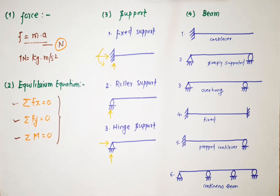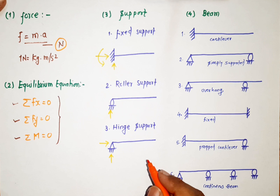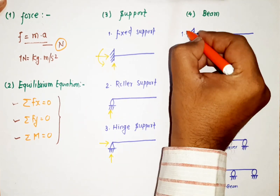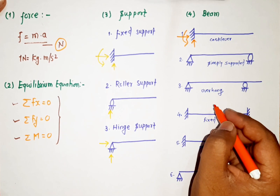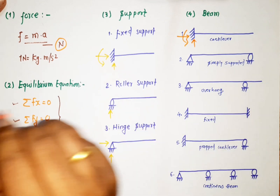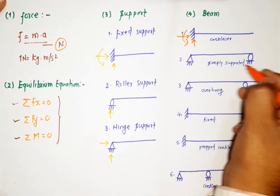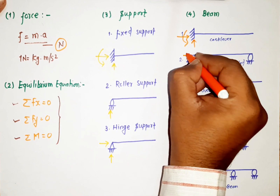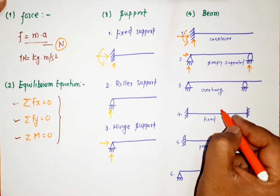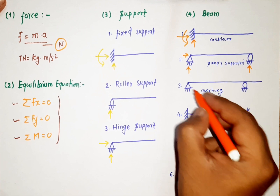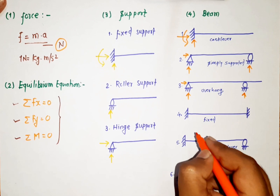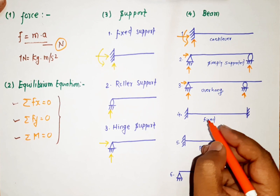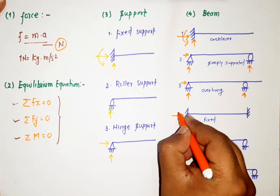Applying these concepts to beams: for a cantilever beam, the fixed support gives three unknowns — one along x, one along y, and one moment at the fixed end. For a simply supported beam, hinge gives two unknowns and roller gives one, totaling three. For an overhang beam, similarly two unknowns at hinge and one at roller. For a fixed beam, fixed supports at both ends give six unknowns total.